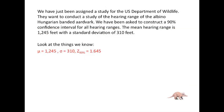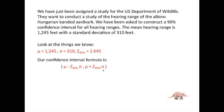Now, looking at the things we know: we know Mu, we know sigma, and we know Z for 90%. We're ready to roll. Our confidence interval formula is given by Mu minus Z times sigma and Mu plus Z times sigma. Z times sigma is an amount on each side of Mu that allows us to trap 90% of our data.